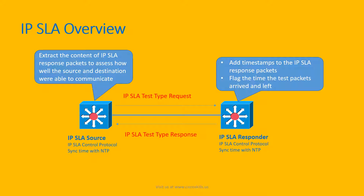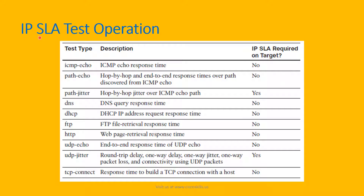In the next slide, we will talk about IP SLA test types. The IP SLA test operations — as you can see, this table lists all the test types that can be performed by a Cisco device: ICMP-echo, path-echo, path-jitter, DNS, DHCP, FTP, HTTP, UDP-echo, UDP-jitter, and TCP-connect. Note that only path-jitter and UDP-jitter require the target device to also support the IP SLA control protocol.